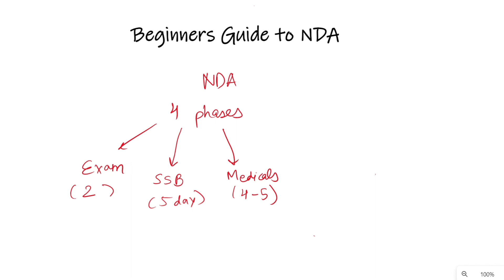Medicals होने के बाद, जो medically fit candidates होते हैं, वो merit list का wait करते हैं, फिर merit list आती है। चौथा phase है merit list का। Merit list में नाम उन सब का आता है जो medical fit candidates होते हैं और वही join कर सकते हैं National Defense Academy को, अगर वो merit में आते हैं। Merit list में कुछ ranks आती हैं, उसके according आपको select किया जाता है और आपको joining letter मिलता है।